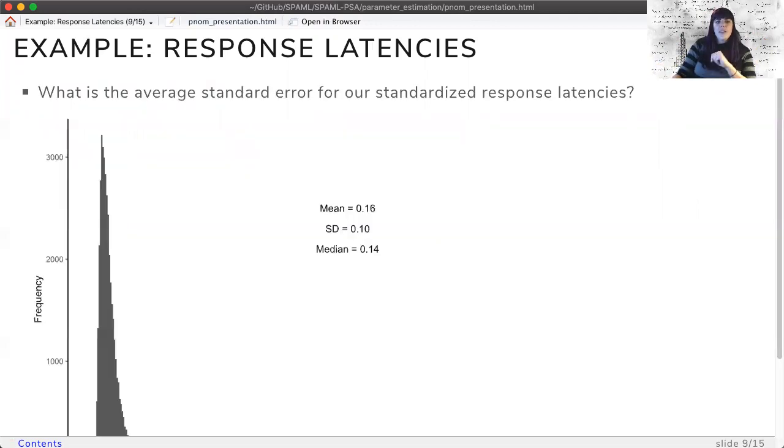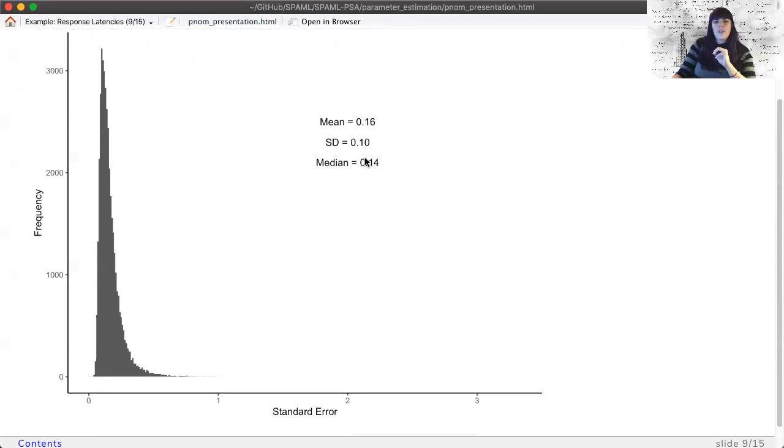So what is the average standard error of a response latency for real English words? As we look at the graph here of each item's standard error, I'll note the average sample size for each word is currently 27. There's a lot of variability in response latency variance, and the average standard error is approximately 0.16.